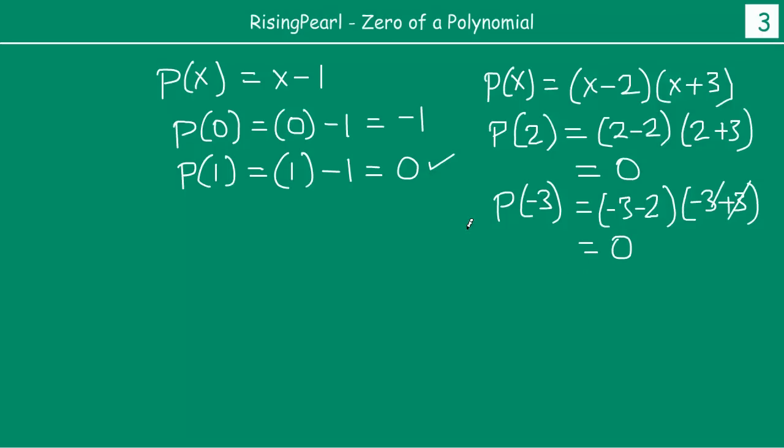So Dostor, now these are some special cases. Aap notice kar rahe ho ki is example mein jab hum x ko 1 lete hain, tab value of the polynomial ban jati hai 0. Similarly is example mein, echele isay kehte hain this example 1 in this particular slide, isay kehte hain example 2. So example 2 mein at x equals to 2 humari value hoti hai 0 and again at x equal to minus 3 the value becomes 0. So Dostor ye hai special cases. So jab kabhi, right, jab kabhi we take such a value of the variable, yaha pe 1, yaha pe both 2 and minus 3. Jab kabhi we take a value of the whole polynomial that makes the value of the whole polynomial at that point 0.